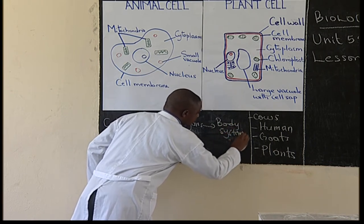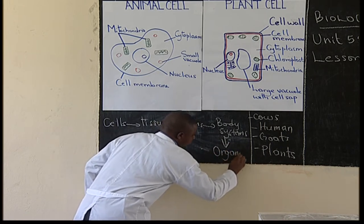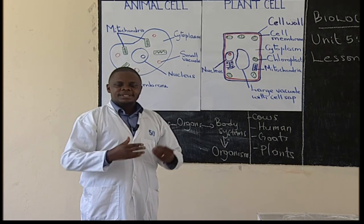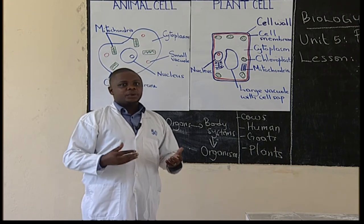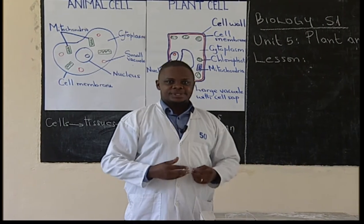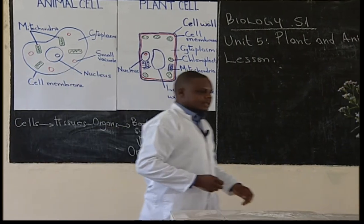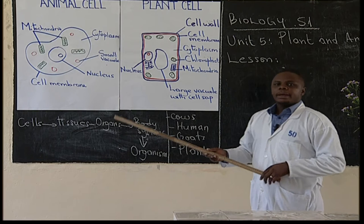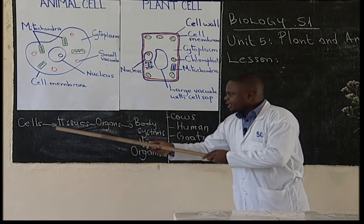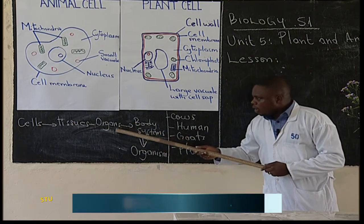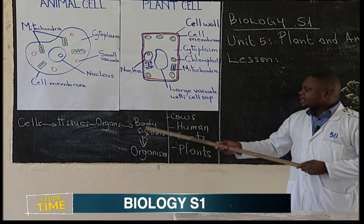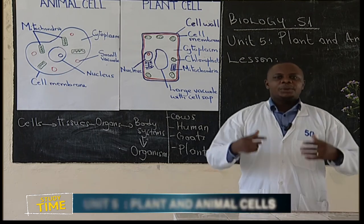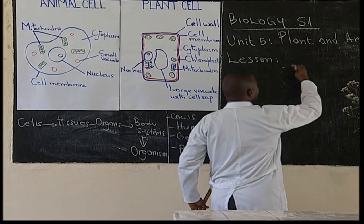Body systems make the entire organism. From here, we can say that a tissue is a group of cells, an organ is a group of tissues, and a body system is a group of organs. All organs of the body make the entire organism. The lesson today will be about cells.